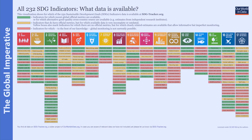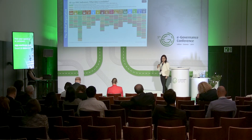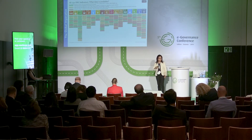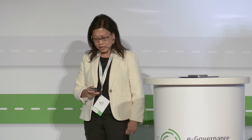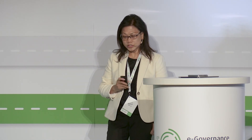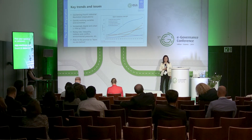We need data to make informed decisions, policies, and to track progress towards 2030. The red indicators flagged on screen are missing — we don't have data on those. So there's a lot of push to look to technologies and digital capacities to help us track and deliver on the SDGs.